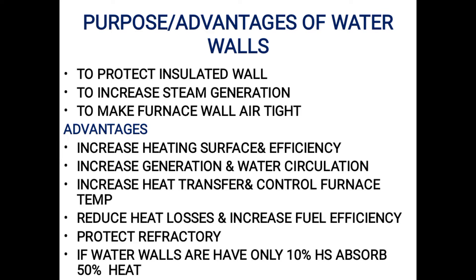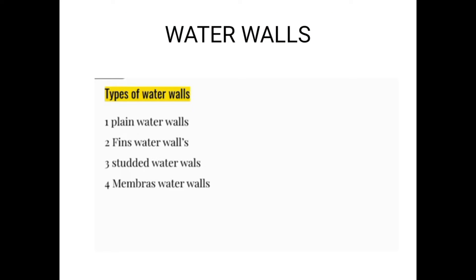Now we go to the types of water walls. There are four types: first is plain water walls, second is fins water walls, third is studded water walls, and fourth is membrane water walls.